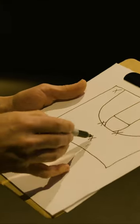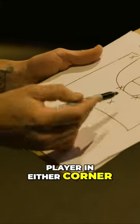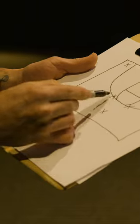This is horns, very simple. Ball handler, a player in either corner, and then two players up here.